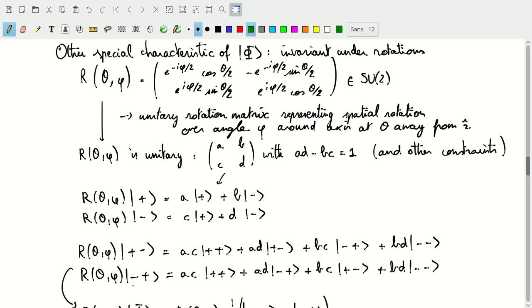We can also do this on the |-+> state. We'll find the same coefficients for the |++> and |--> basis factors. But we'll find the opposite coefficients for the |-+> and |+-> states.